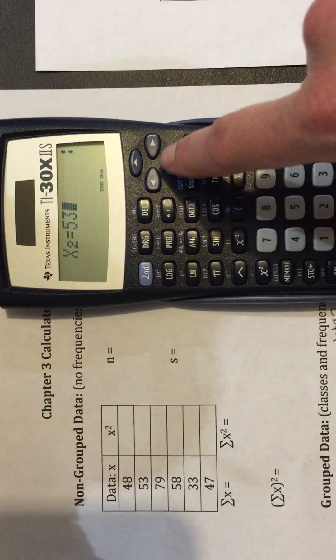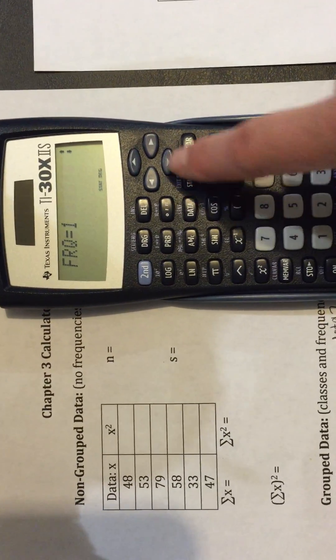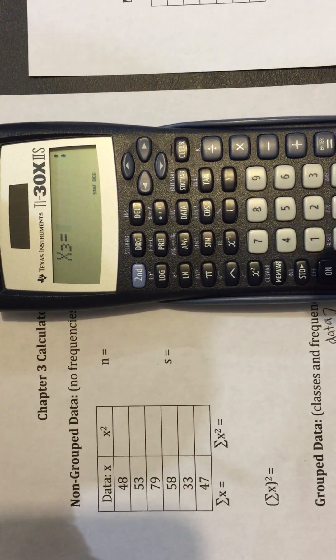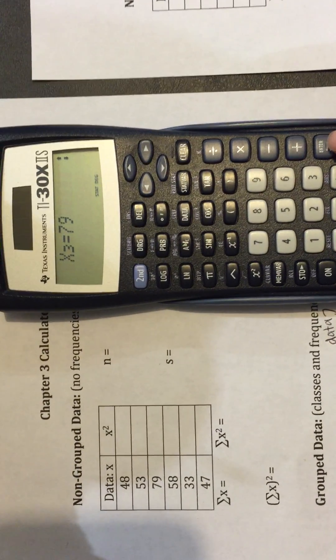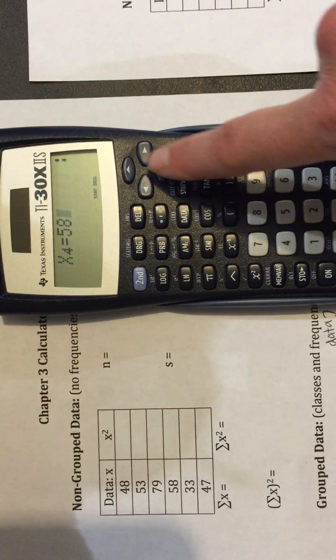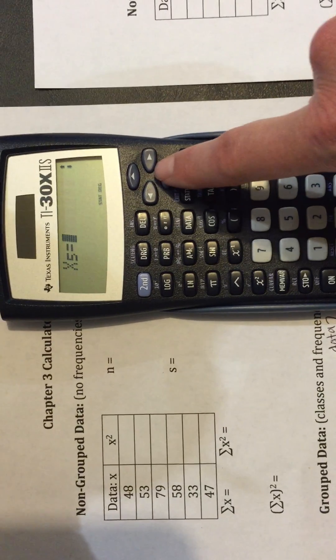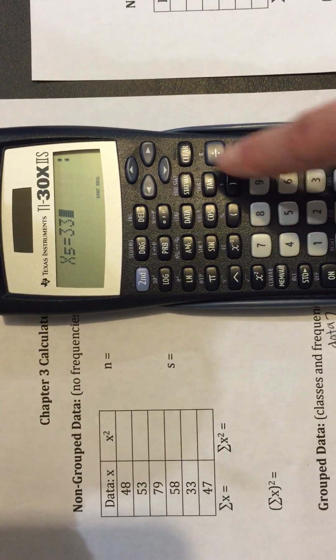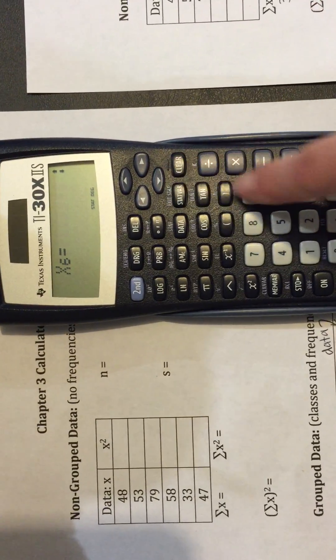X2, 53. Down arrow. Just one of them. X3, 79. 58. Down arrow twice. 33. 47.